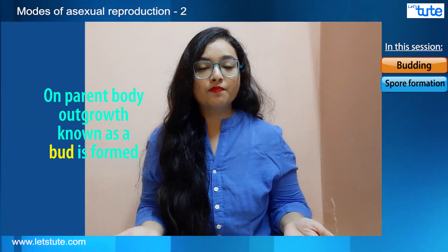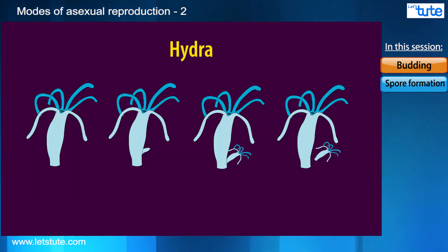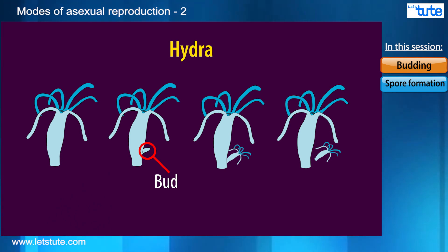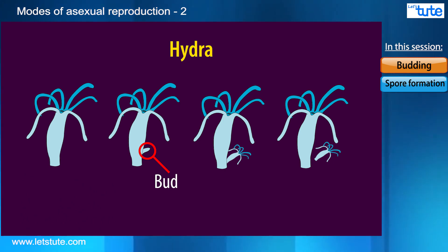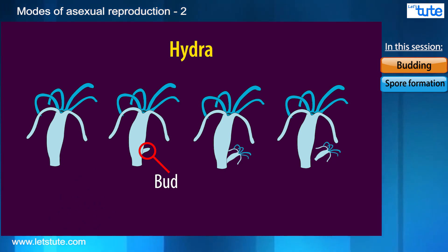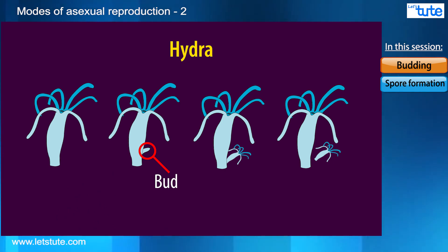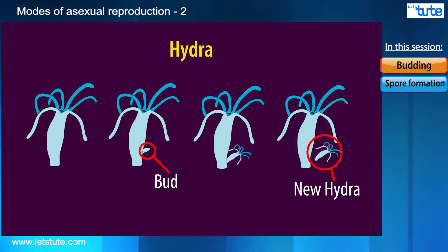In these particular organisms, the process uses regenerative cells which form buds or outgrowths because of repetitive cell division occurring at only one specific location, creating an outgrowth or what we call a bud. These buds remain attached to the parent body until the time they are growing, and they only detach from the parent body once they are fully matured or fully formed.